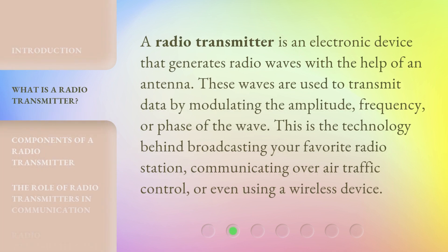A radio transmitter is an electronic device that generates radio waves with the help of an antenna. These waves are used to transmit data by modulating the amplitude, frequency, or phase of the wave. This is the technology behind broadcasting your favorite radio station, communicating over air traffic control, or even using a wireless device.